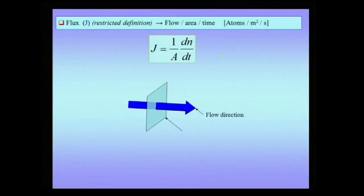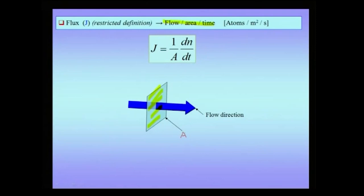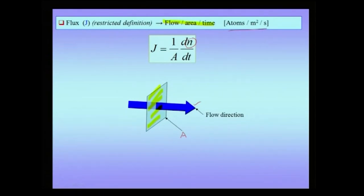One of the important quantities in diffusion is the flux of material. Flux can be defined as flow of matter per unit area per unit time. Considering a unit area A, the flux would be 1/A times the number of atoms crossing that unit area per unit time. The units of flux are atoms per meter squared per second.